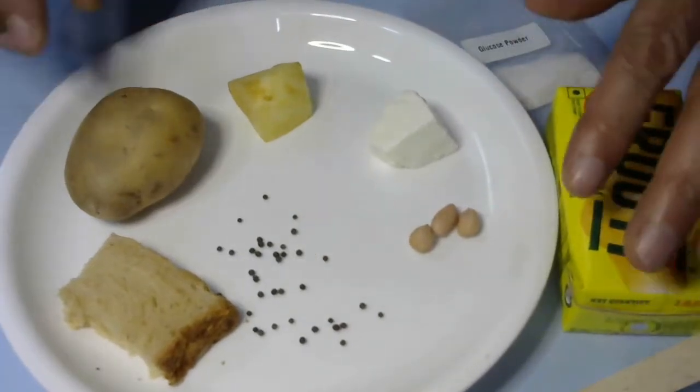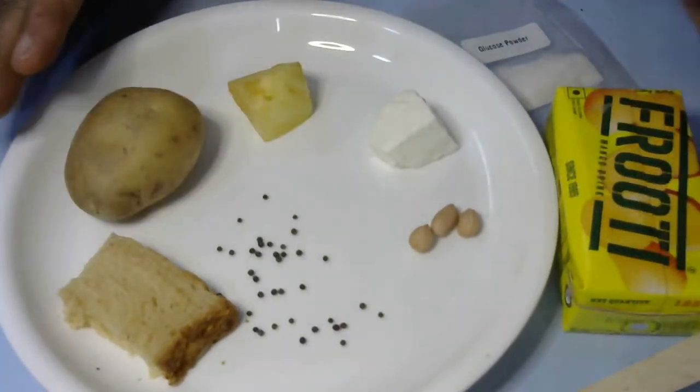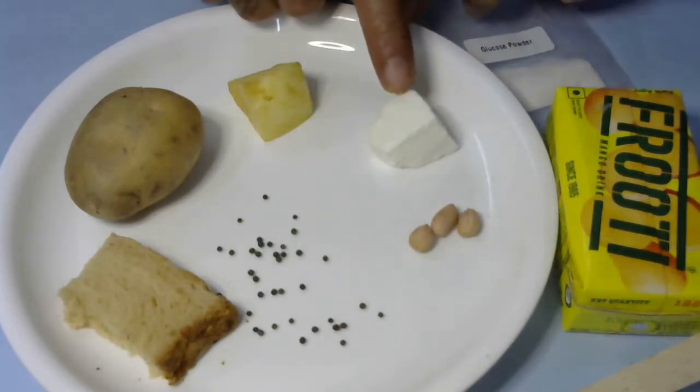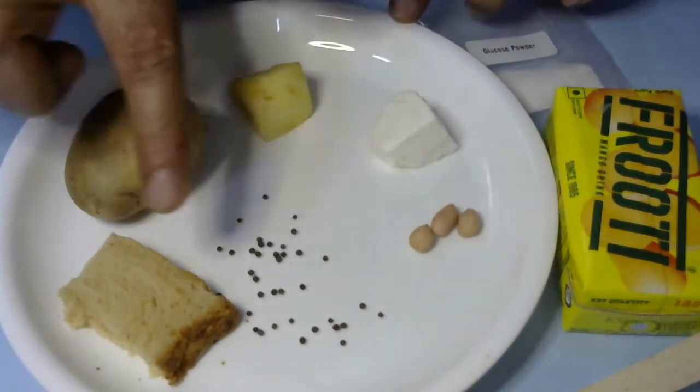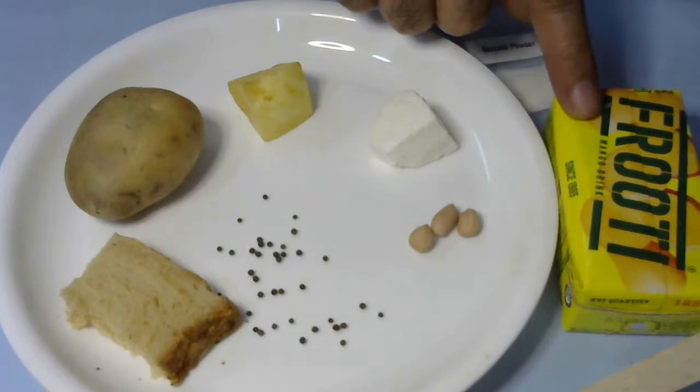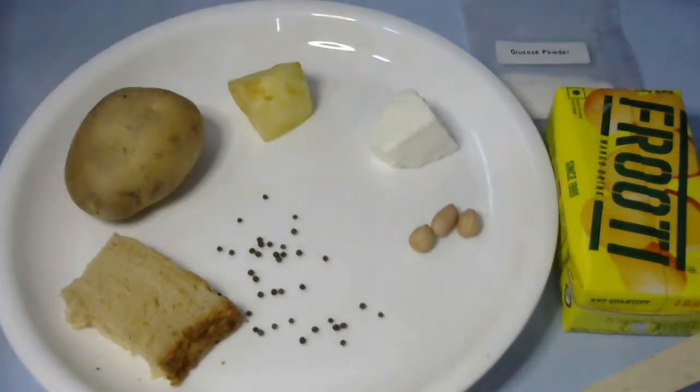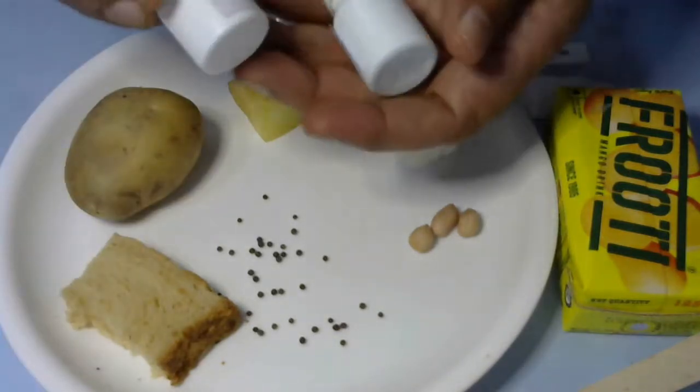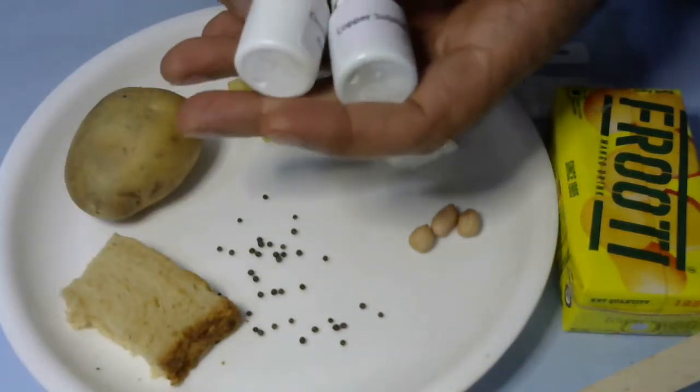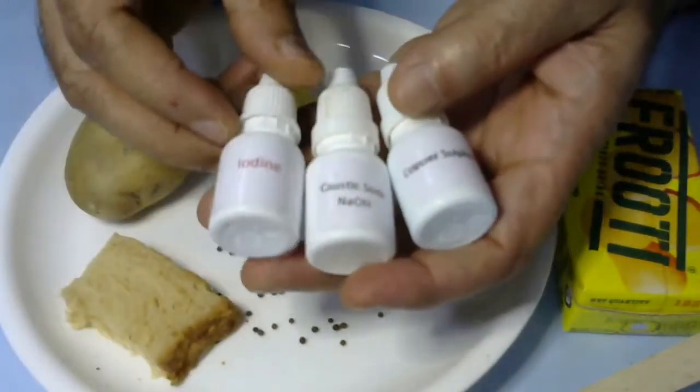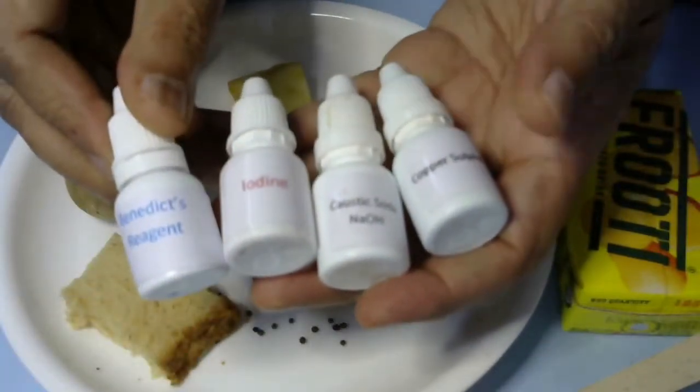For testing purposes, we have collected these food items: potato, fruit like apple, paneer, peanuts, mustard seeds, bread, and glucose powder to test glucose properly. We will need different chemicals from your kit: copper sulfate solution, caustic soda solution, iodine, and Benedict's reagent.